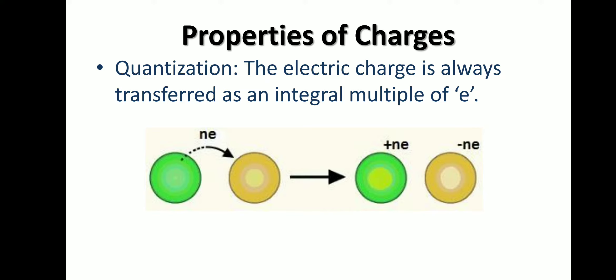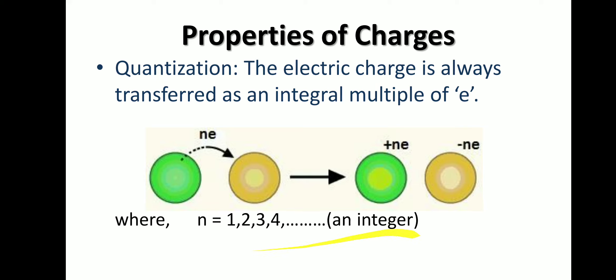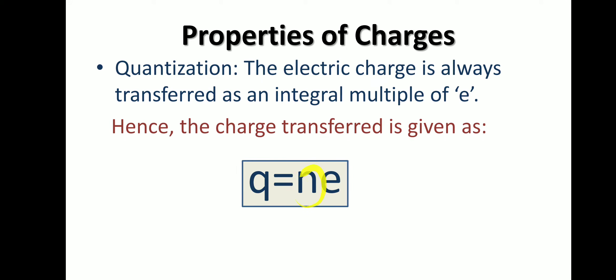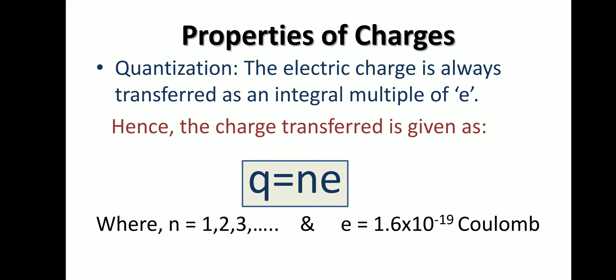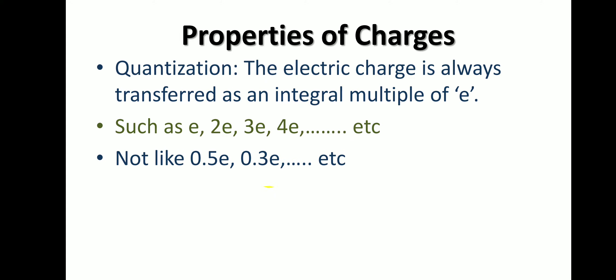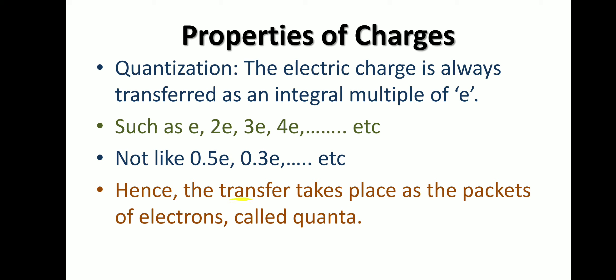The number n will always be like 1, 2, 3, 4, 5 and so on — never a fraction like 0.5, 1.5, or 1.3. So the charge transferred is q = ne, where n is the number of electrons — always an integer — and e is the charge of the electron, with a value of 1.6 × 10⁻¹⁹ coulombs. The electric charge is always transferred as an integral multiple of e, such as e, 2e, 3e, and so on. One packet of electrons is called a quantum.